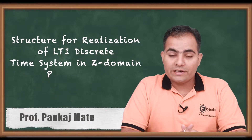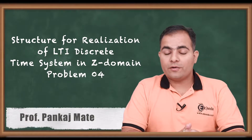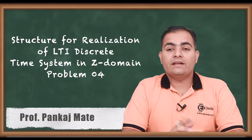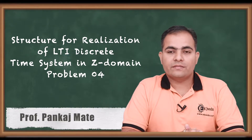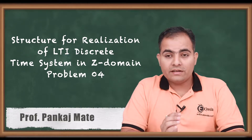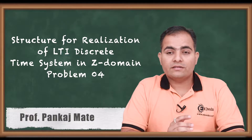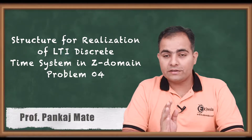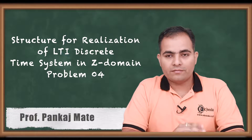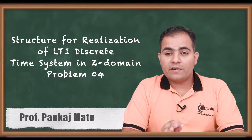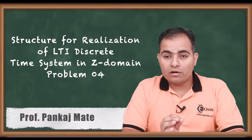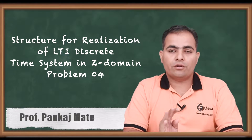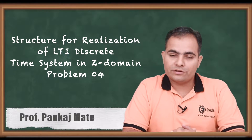Hello friends, today we are going to study numerical problem number 4, which is based on realization in a discrete time system. The coming numericals are completely based on cascade form and parallel form. In cascade and parallel form, we will always use a DF2 structure, or direct form 2 structure.